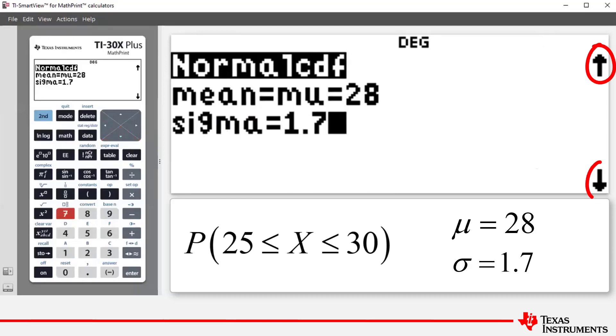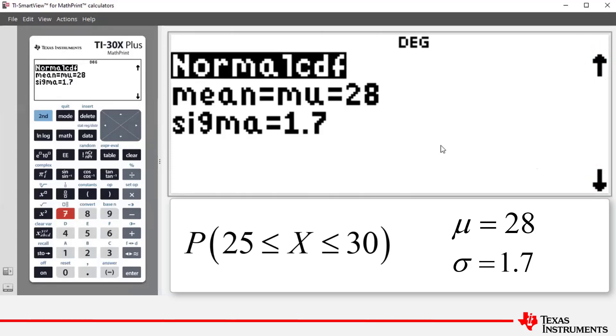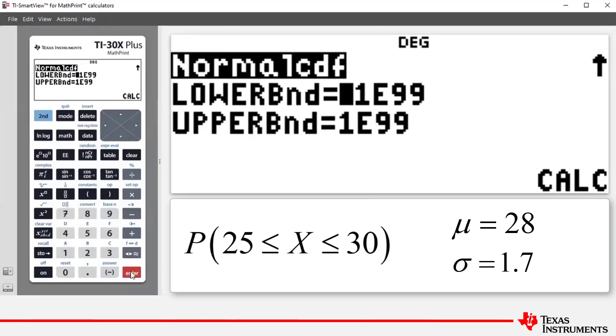You can see there's some prompting arrows both top right and bottom right of the screen. If we press enter, it now takes us to our lower bounds and upper bounds. Now we want a probability for random variable X lying between 25 and 30, so our lower bound is going to be 25 and our upper bound is going to be 30. So we've entered the mean, the standard deviation, and the two bounds.